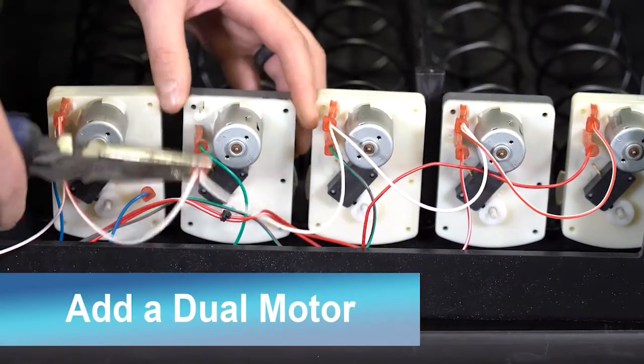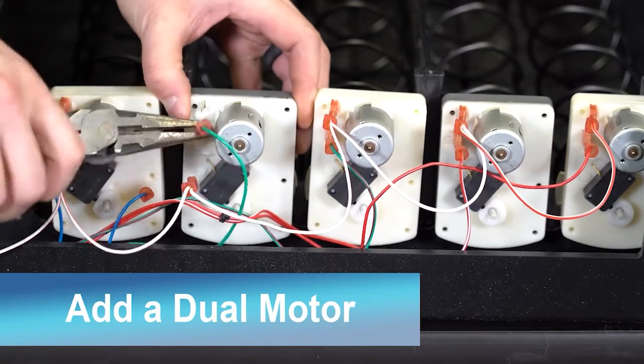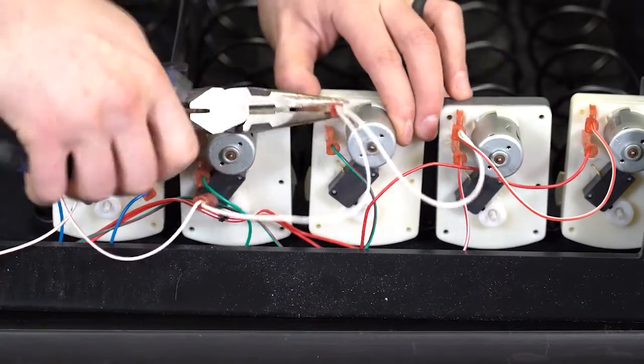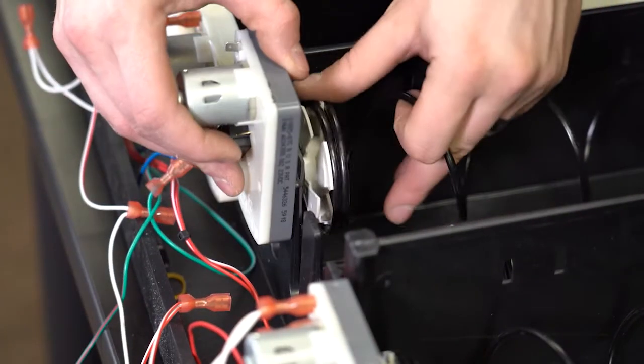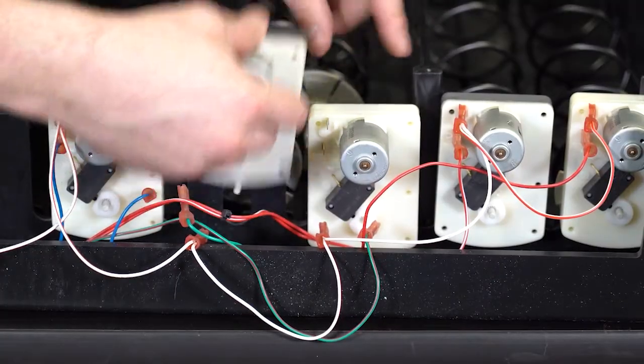Remove the wires from the single motors with a pair of pliers. Then unhook the motors from the couplers and replace them with a dual motor.